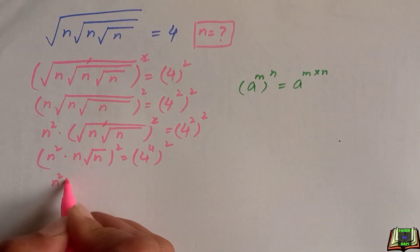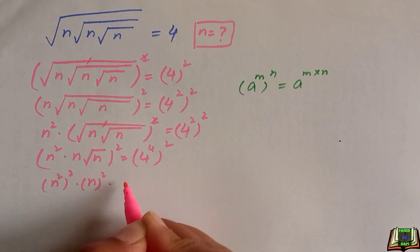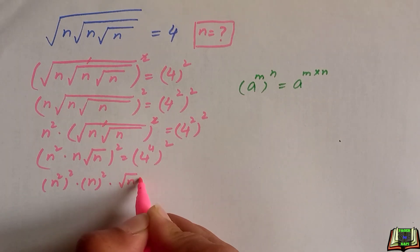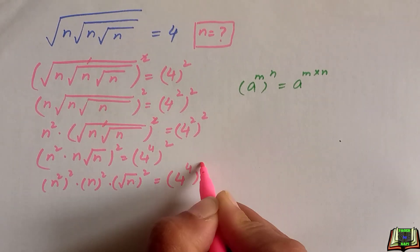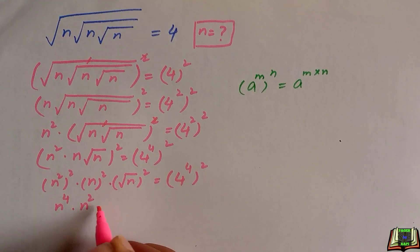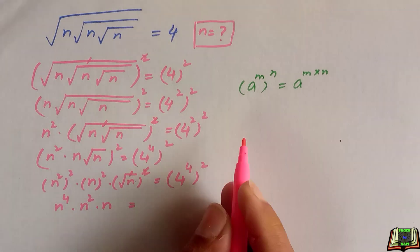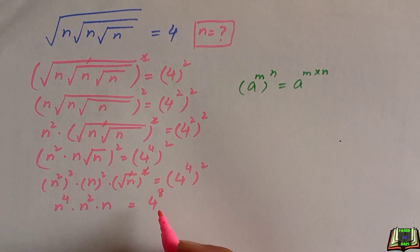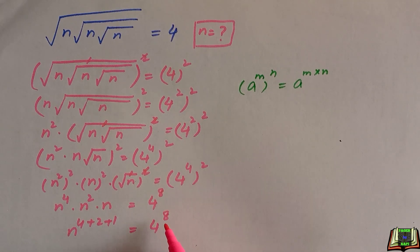Now once again we will take the square of this equation on both sides. This gives us n squared whole squared, times n squared, times square root of n whole squared, equal to 4 raised to the power 4, raised to the power 2. This simplifies to n to the power 4, times n squared, times n — since the square and root cancel — equal to 4 raised to the power 8.